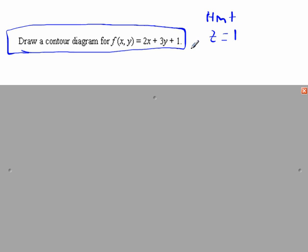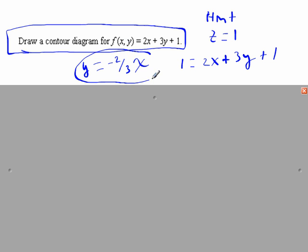And when z equals one, we get the line or the shape which ends up being a line one equals two x plus three y plus one. Well, solving this for y, we're going to get y equals negative two thirds x. So the line y equals negative two thirds x is a contour line for when z equals one.